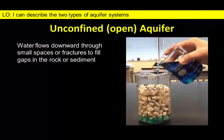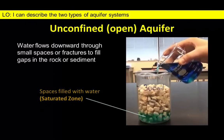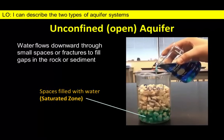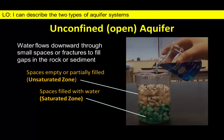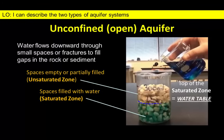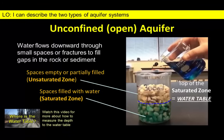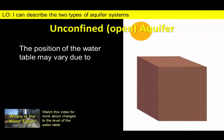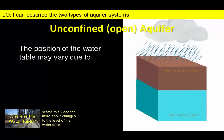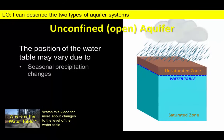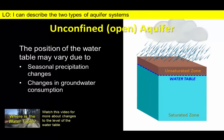Unconfined aquifers are supplied by water that filters down from the land surface — much like pouring water into a beaker of gravel. The water easily flows between the grains and the level of water in the beaker is dependent upon the water supply. The water table represents the upper surface of an unconfined aquifer. The greater the water supply, the higher the elevation of the water table. We expect the water table to show some short-term fluctuations related to storms and longer-term seasonal variations. There is also the potential for a decline in the depth of the water table if groundwater is consumed more rapidly than it is replenished.